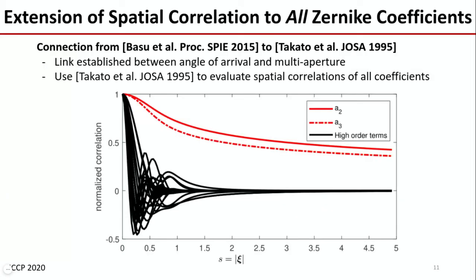Another advantage in establishing such a link is that multi-aperture correlations for all Zernike coefficients are known how to evaluate as a result of Takato. We then plot the spatial correlations as a function of separations and find, as did Takato, the following behavior. That is, the high order coefficients, those corresponding to the blur, have a very short correlation range, while the tilt coefficients have almost global correlation.